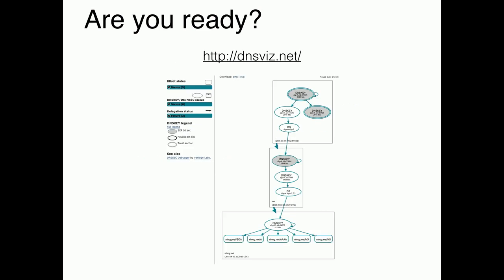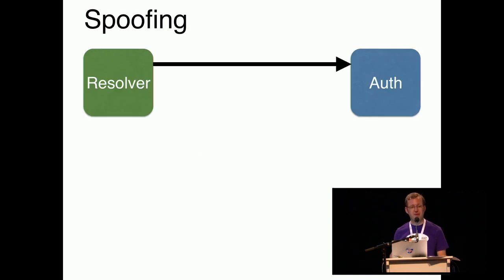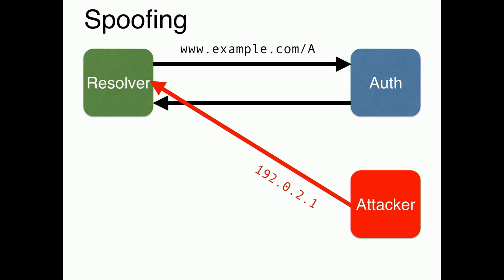For bonus points, go to DNS FIS and also check your domains there. Any errors or warnings you see there may also be hurting your performance. If none of that was convincing enough, there is one other reason to always answer your queries, and that is spoofing. If a resolver sends a query to you and you don't respond, you're giving an attacker many seconds to guess the query ID and send a spoofed reply. Even if you don't care about DNSSEC or DNS compliance, this alone should be enough reason to run compliant name servers.